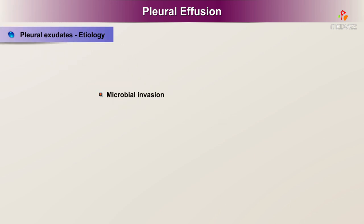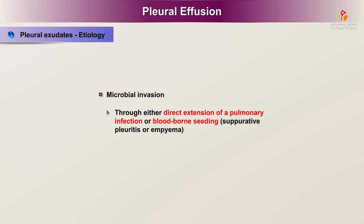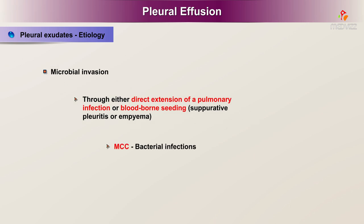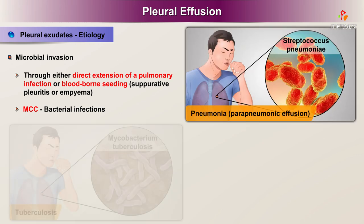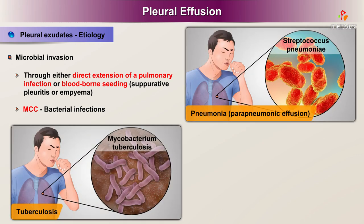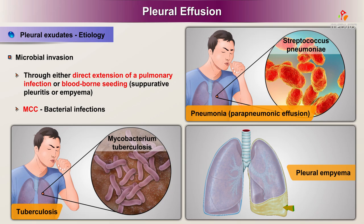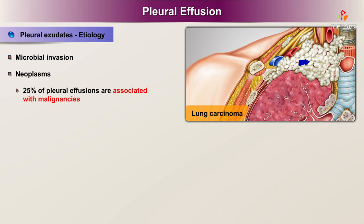Causes of pleural exudates include microbial invasion through either direct extension of a pulmonary infection or blood-borne seeding, resulting in suppurative pleuritis or empyema. Bacterial infections are the most common cause, with examples including pneumonia, parapneumonic effusion, tuberculosis, and pleural empyema.